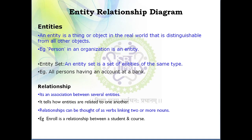We'll start from the basics — entity. Entity is nothing but an object, similar to what you learn in object-oriented programming. An entity is a thing or object in the real world that is distinguishable from all other objects. For example, a person in an organization is one entity, a student is one entity, a teacher is one entity, and a course is one entity.